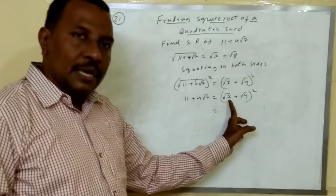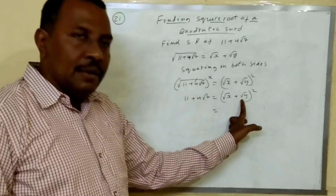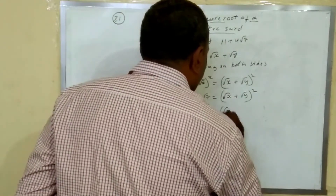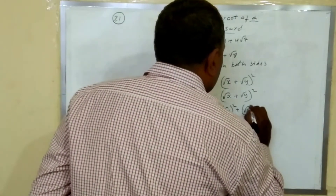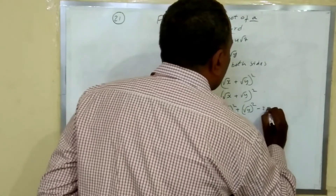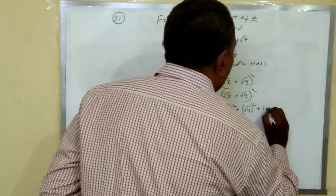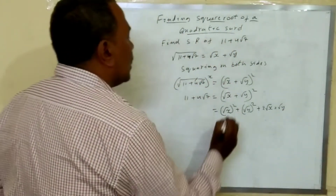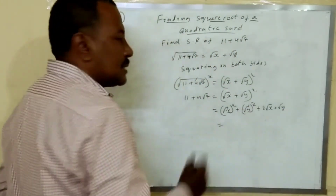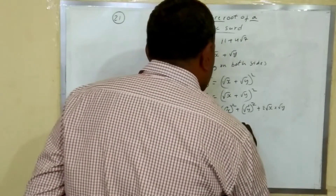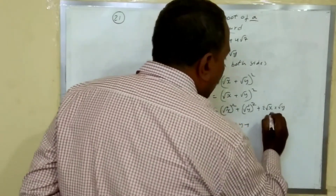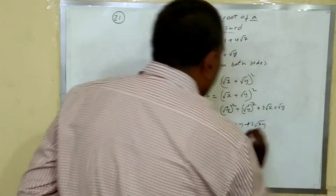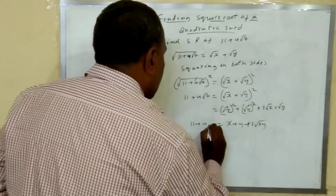In place of a, root x is there. In place of b, root y is there. So that equals root x whole square plus root y whole square plus 2 into root x into root y. Square and root get cancelled, giving x plus y plus 2 root xy, which equals 11 plus 4 root 7.